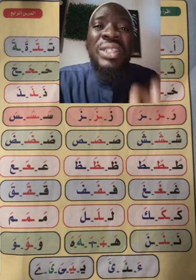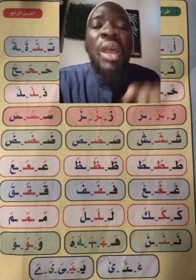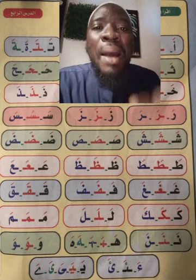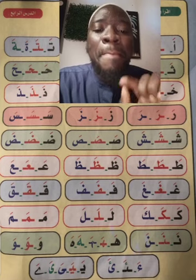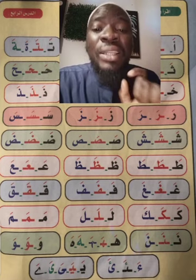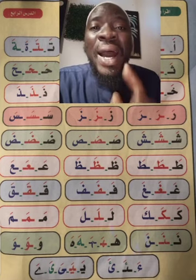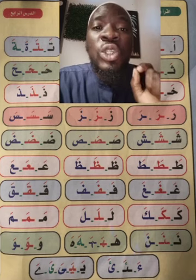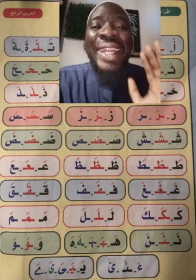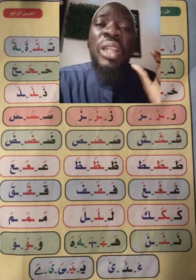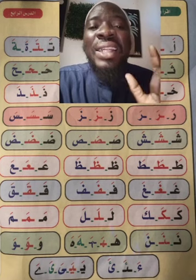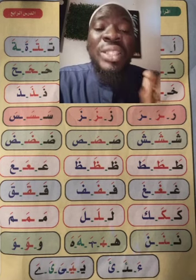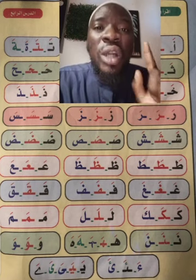Then the next letter is Mim. Mim with Fathah: MA — don't say MA (with heaviness), it is Tarqiq not Tafkhim. Mim with Fathah: MA, MA, MA. Look at MA at the beginning, MA at the middle, MA at the end. Then the next letter is Nun. Nun with Fathah: NA — don't say NA (heavy), you say NA, NA, NA. You can see that Nun is having one dot.